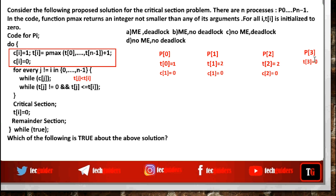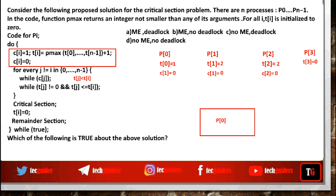Suppose P3 got the processor — P3 is not executing the critical section. Then P0 gets the processor again. P0 checks: no process is now choosing the token number. It checks the next condition — whether there is any token not equal to 0, and whether those token numbers are less than this token number. No. So P0 can enter the critical section. A process with the lowest token number enters the critical section first.